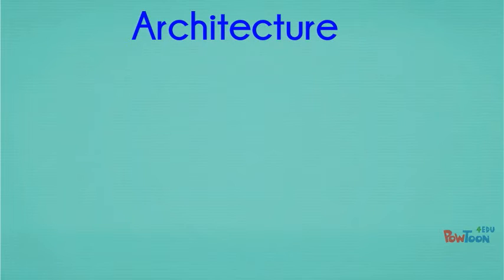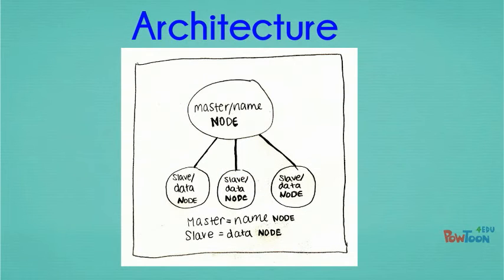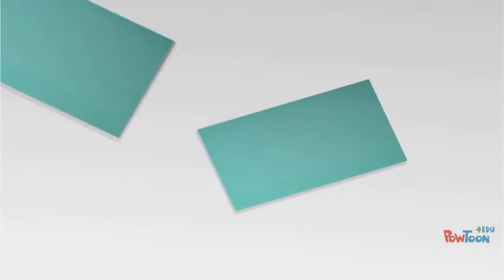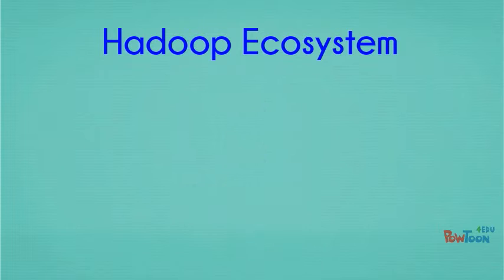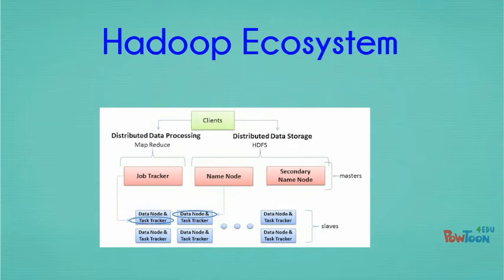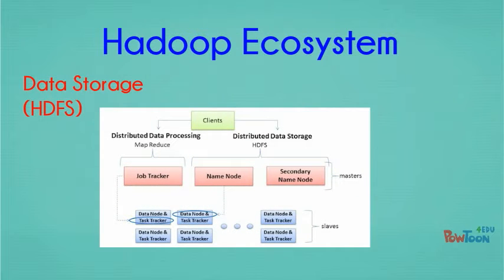Hadoop delegates tasks across multiple servers called worker nodes or slave nodes, essentially harnessing the power of each device and running them together simultaneously. In this way, Hadoop can be thought of as an ecosystem, comprised of many different components that all work together to create a single platform. There are two key functional components within this ecosystem: the storage of data, or HDFS, and the framework for running parallel computations of this data, or MapReduce.